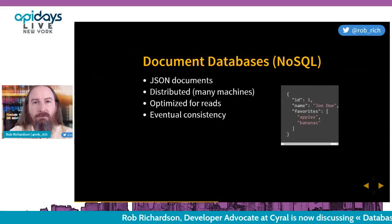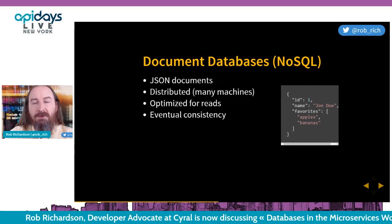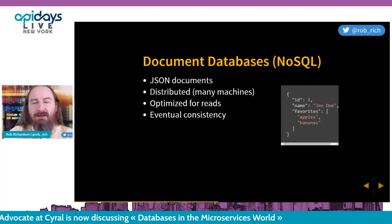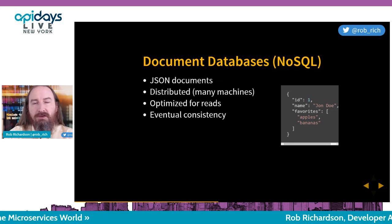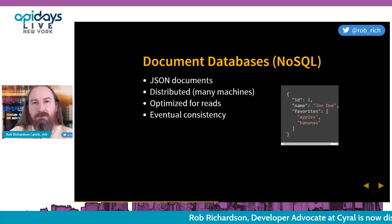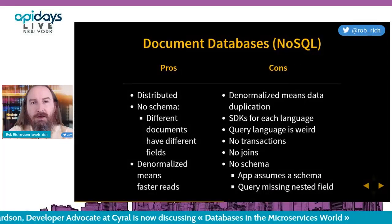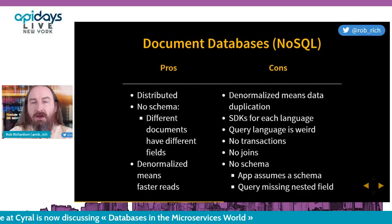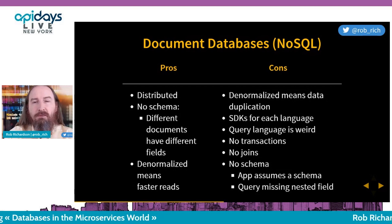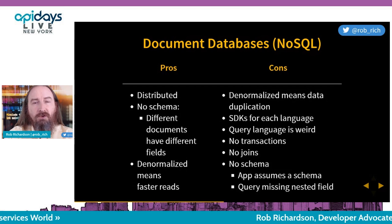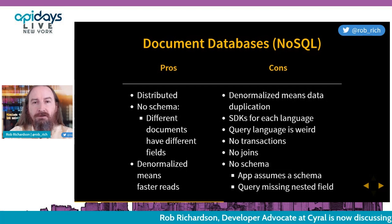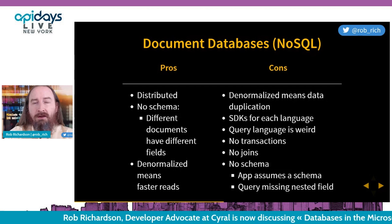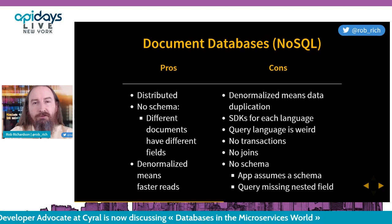Next, let's look at document databases — I'll specifically call them document databases because everything that isn't SQL is technically NoSQL. In a document database we're storing JSON, and this JSON doesn't need to have the same schema for each document — we can have nested fields, and our data may already look like this. On the upside, we can nest documents however we'd like and there's no schema. On the downside, our application may assume a particular schema, requiring extra error handling when a field doesn't exist, and querying into an array that doesn't exist adds complexity.